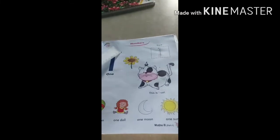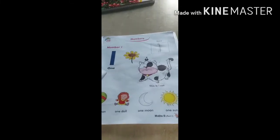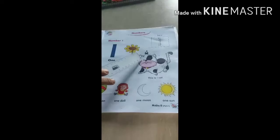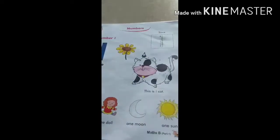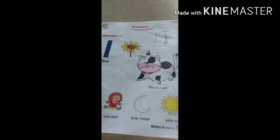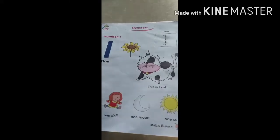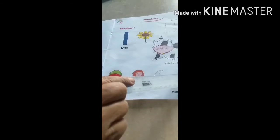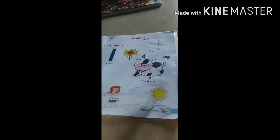See here, number one, O-N-E, one. One flower, one cat. The cat has only one eye, one tail, and one pony. See here, one balloon, one doll, one moon, one sun. Do you understand children?